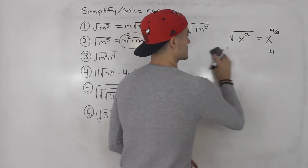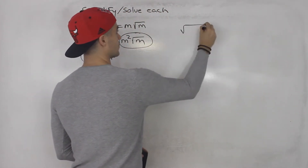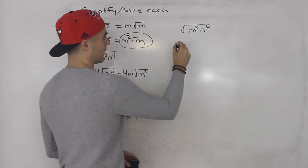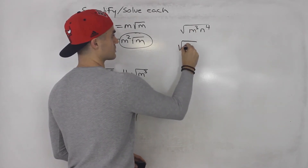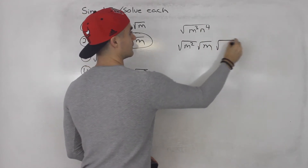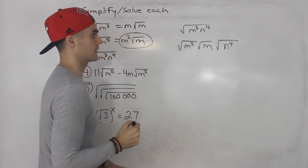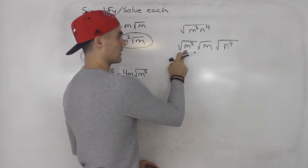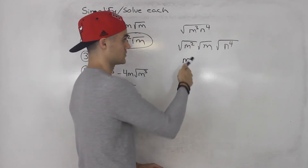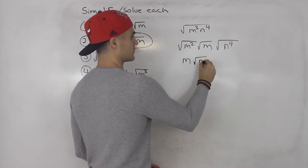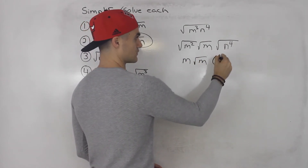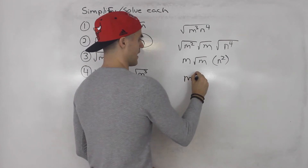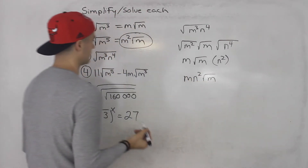Moving on to the next question: the square root of m cubed n to the 4th. Break down m cubed into root m squared times root m, and keep root n to the 4th as is since 4 is an even exponent. Square root of m squared is m (that's 2 divided by 2), root m stays as is, and square root of n to the 4th — divide 4 by 2 — gives n squared. Bringing it together: mn squared root m.